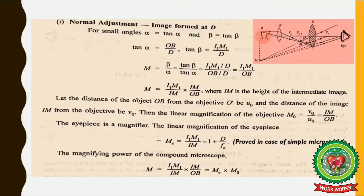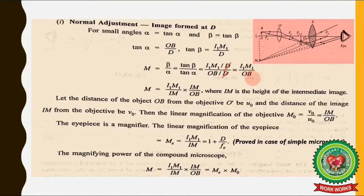Similarly, tan β = I₁M₁/D. Since β = tan β and α = tan α, we write M = tan β / tan α. Substituting these values, D cancels out and we are left with M = I₁M₁/OB. We can also write this by multiplying and dividing by IM, where IM is the height of the intermediate image.